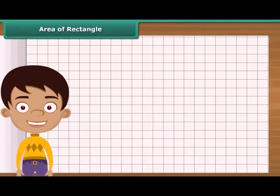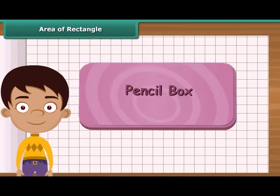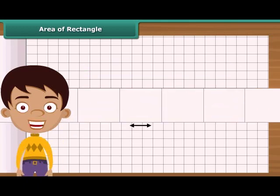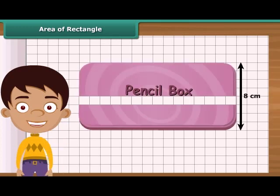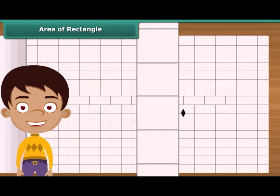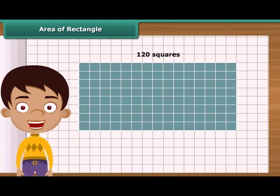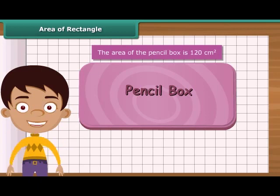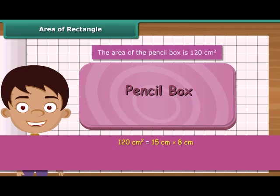Let us find the area of a rectangle by counting squares. Take a rectangular pencil box and place it on a squared paper. The length of the box is 15 centimeters — arrange 15 squares of side one centimeter along its length. The breadth of the box is 8 centimeters — arrange 8 squares of side one centimeter along its breadth. Altogether, 120 squares have been arranged on the squared paper. It means the area of the pencil box is 120 centimeters square, which is 15 centimeters multiplied by 8 centimeters.